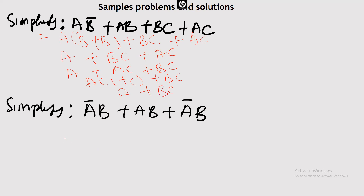Now, problem two: we have ĀB + AB + ĀB. To do this, we can place the bar here and factor it as Āb̄ + B(A + Ā).